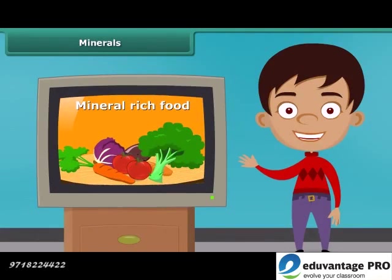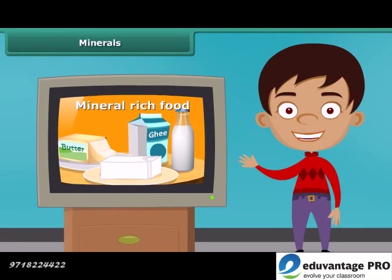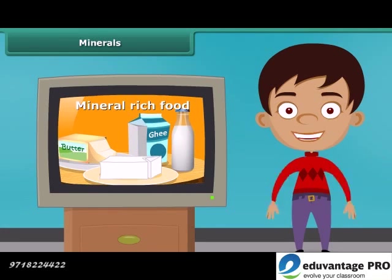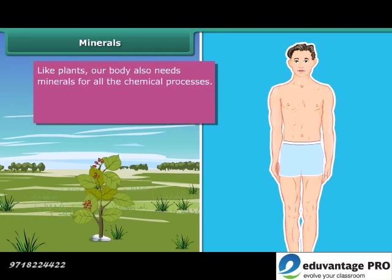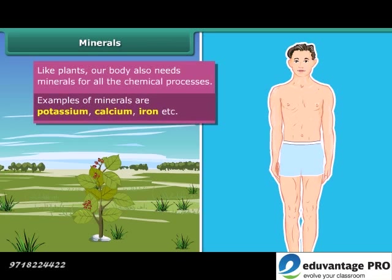You might have seen many advertisements of mineral-rich food items. Plants need minerals for growth, and our body also requires minerals in small quantities for all chemical processes. Potassium, calcium, iron, etc. are some common examples of these minerals. Let us know more about the sources and the role of these minerals using the next table.